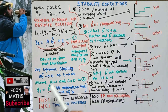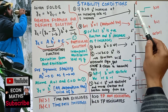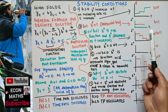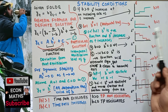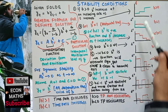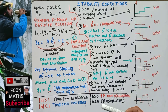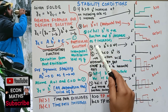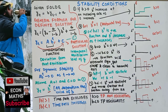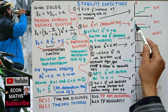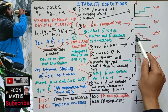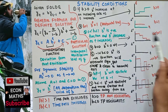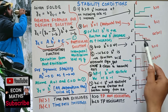If b is greater than 1, b^t increases at an increasing rate as t increases — the time path explodes. Since we use discrete time intervals, we have a step function rather than a continuous curve. If b equals 1, b^t equals 1, giving a horizontal line. If b lies between 0 and 1, b^t is a positive fraction converging towards 0.